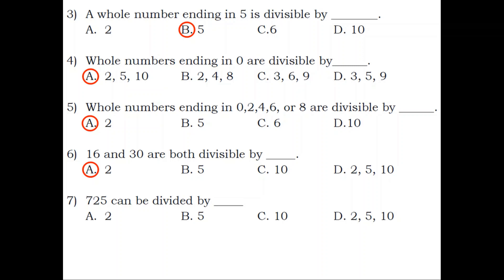Number 7. 725 can be divided by blank. A. 2. B. 5. C. 10. D. 2, 5, and 10. Answer: B. 5.